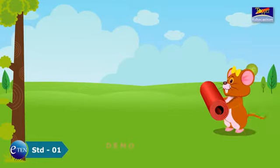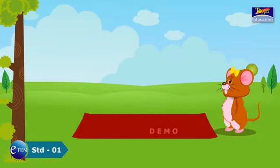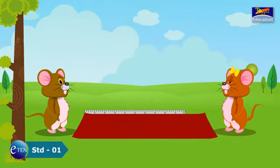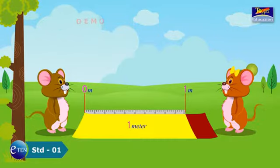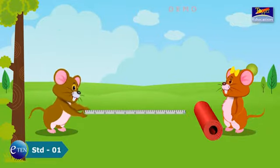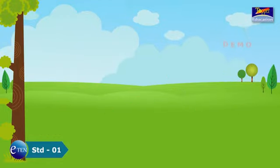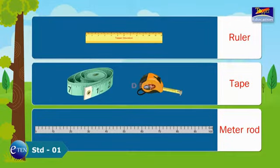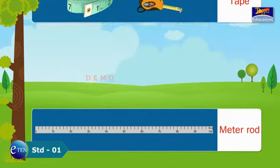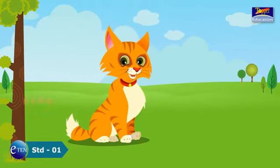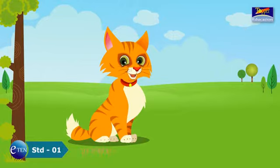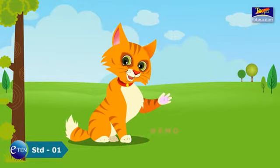That is why we use something that is equal for everybody. This is called a meter rod. The meter rod is the same in every country across the world, and we use it to measure many different things. The smaller version of a meter rod is called a ruler. Now you know how to find how long or tall different things are, using a meter rod and a ruler.